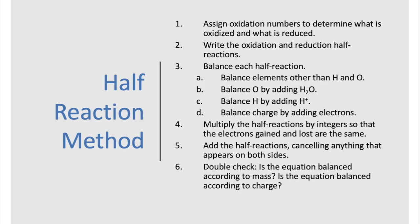For example, if our oxidation half-reaction releases two electrons but our reduction half-reaction only gains one electron, then we have to multiply our reduction reaction by two. Then we add the half-reactions together, cancel anything that's on both sides, and finally double-check to make sure that the equation is balanced according to both mass and charge.